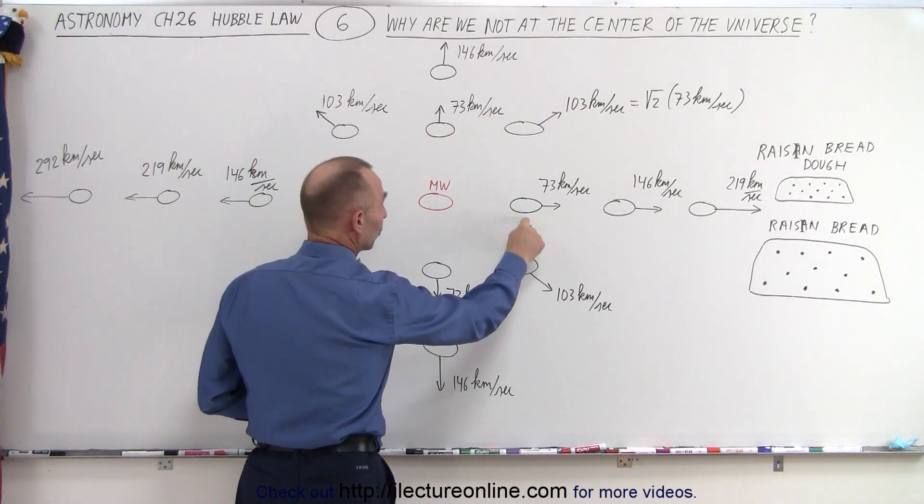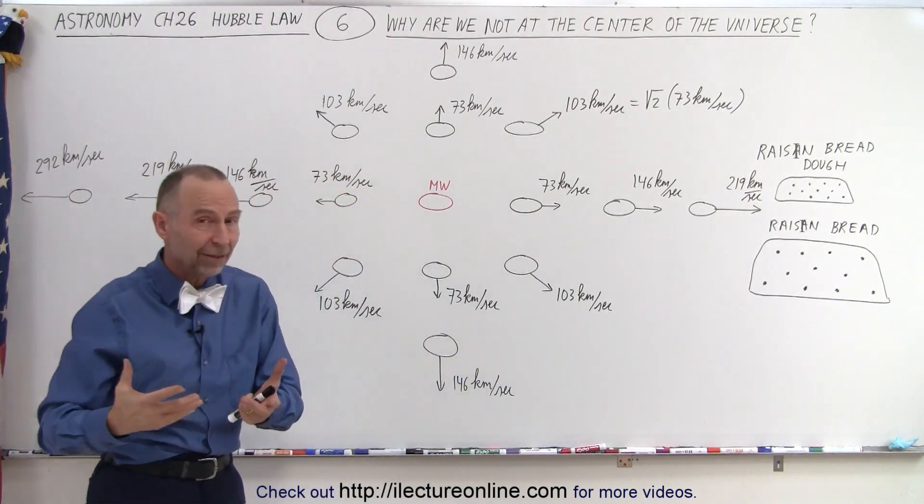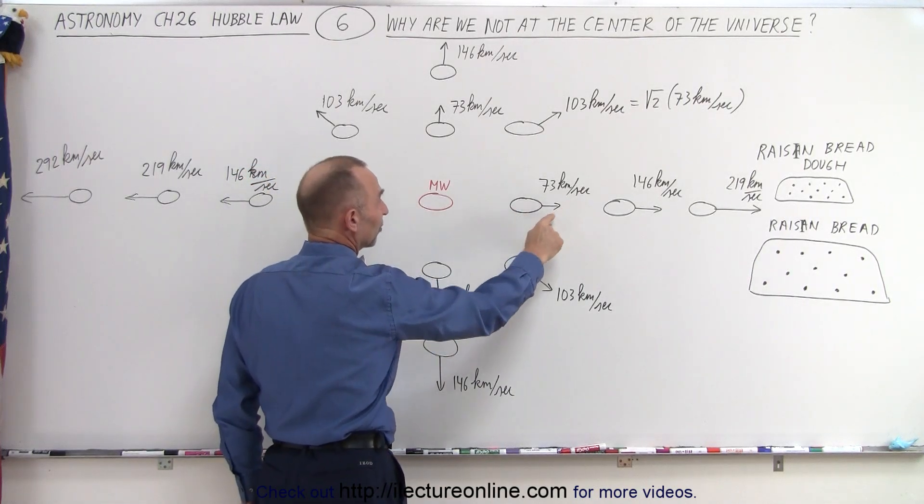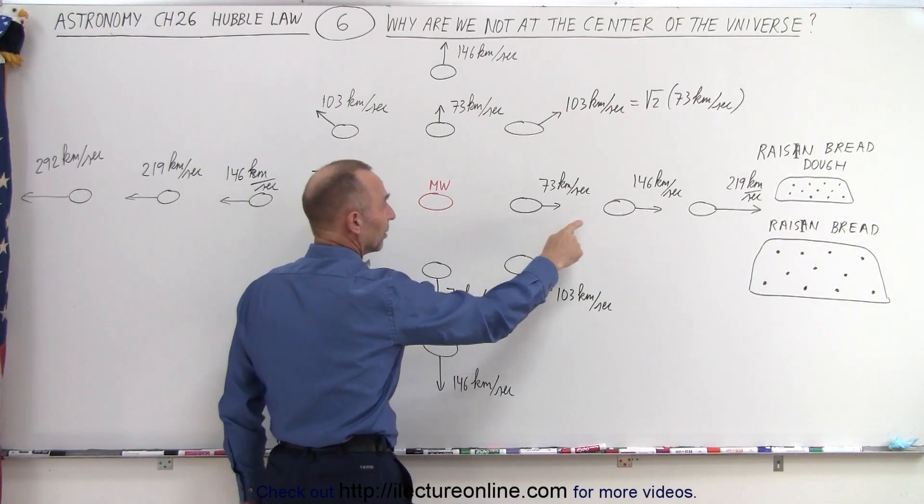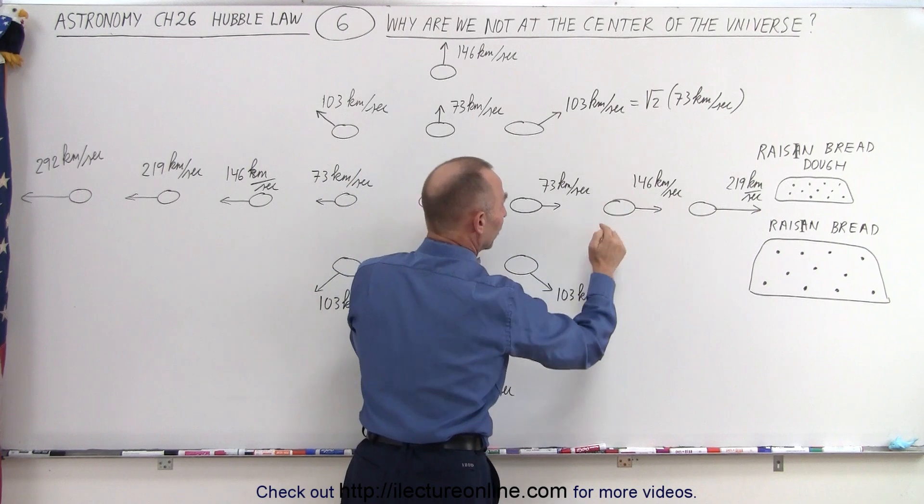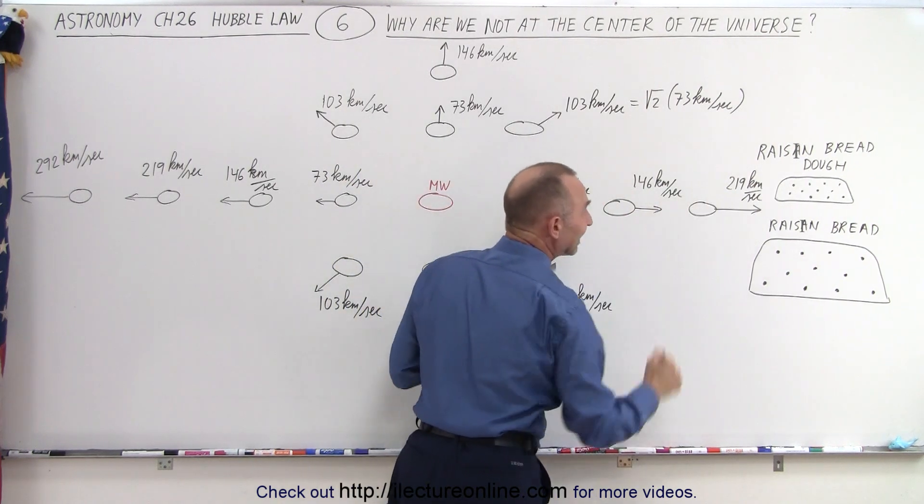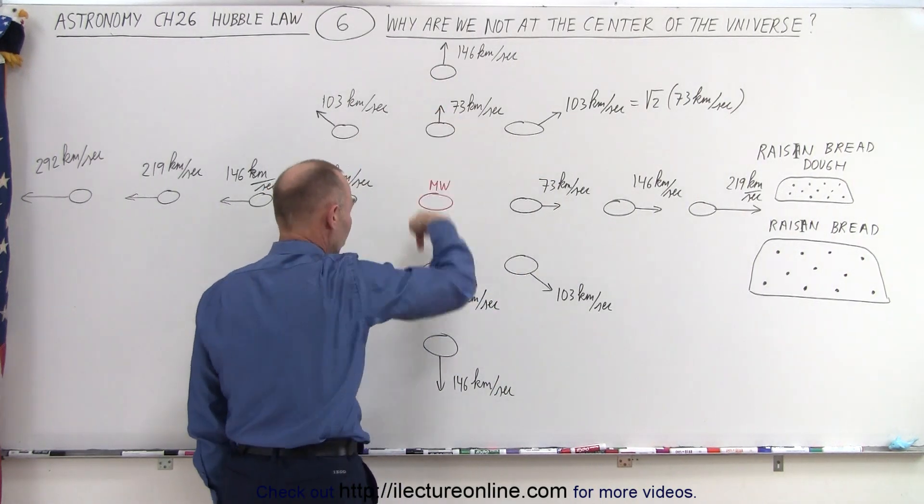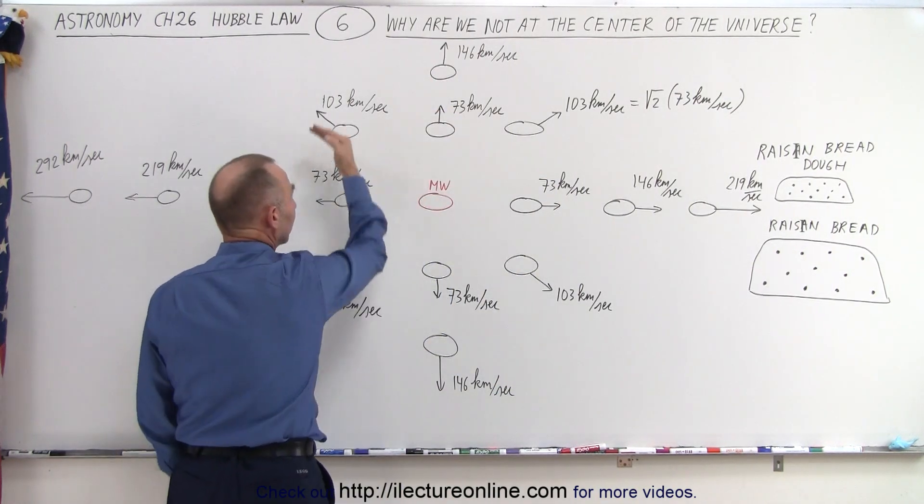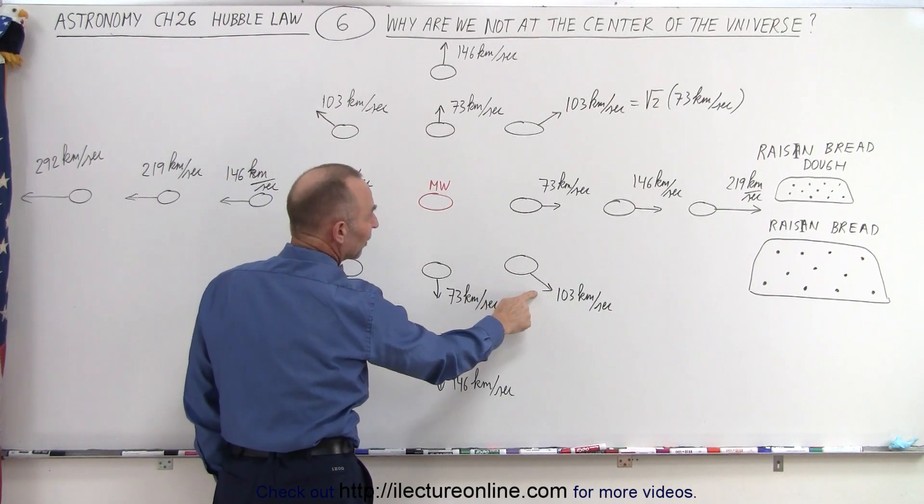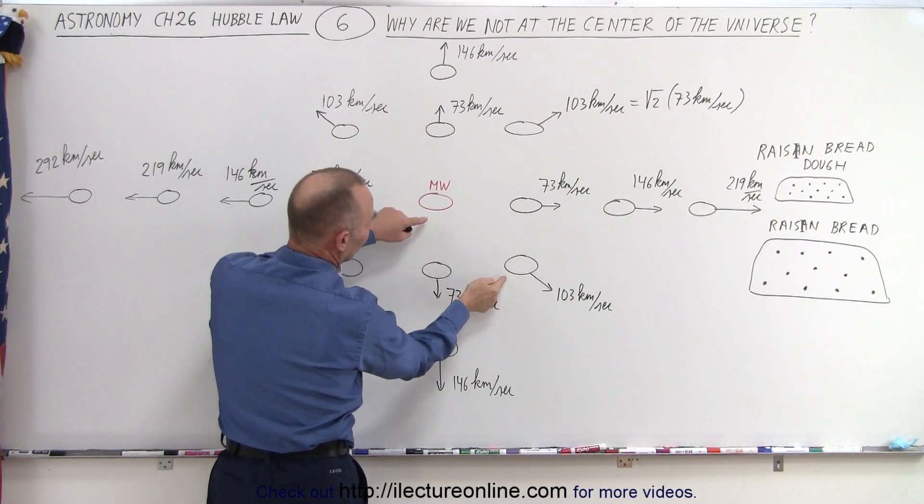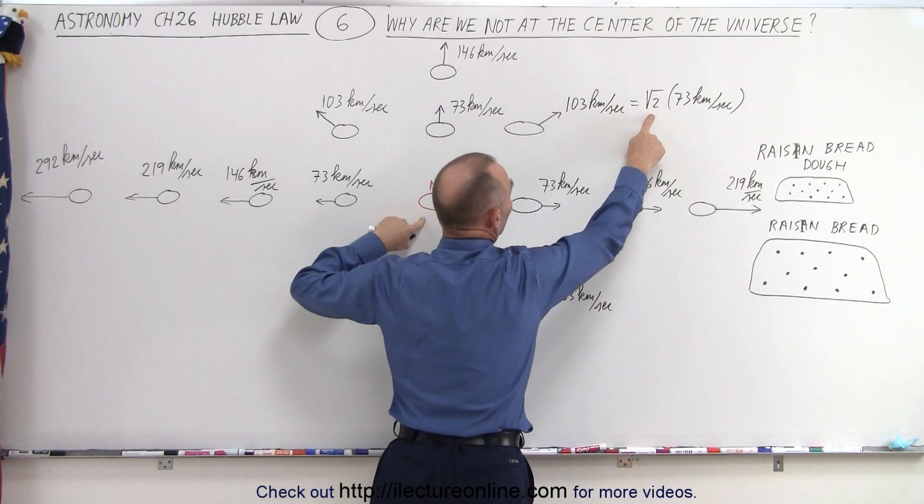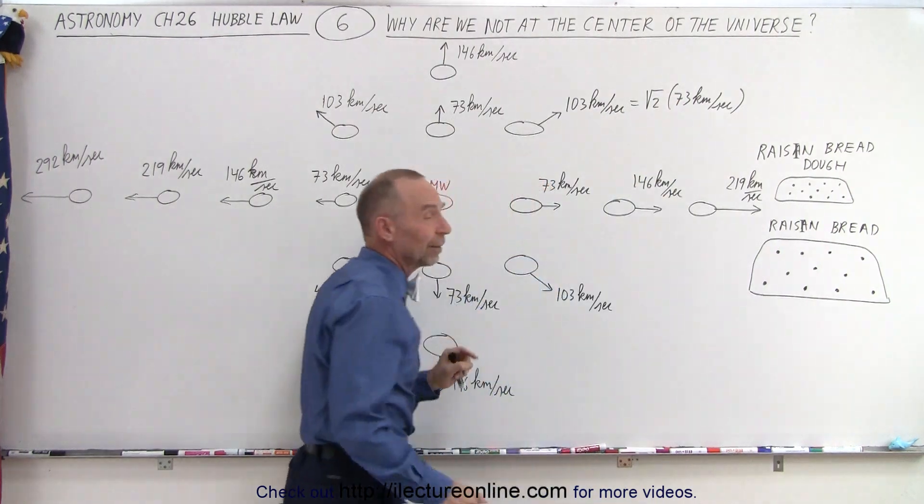So assuming that this is 1 megaparsec and the Hubble constant being about 73 kilometers per second per megaparsec, then this galaxy would be moving away from us at 73 kilometers per second, this one being twice the distance at 146, and this one at three times the distance, 219 kilometers per second. But it doesn't matter if we look in that direction or we look in this direction or this direction or this direction or diagonally. Notice that this one is moving a little bit faster because diagonally this distance is greater than this. And so you can see that 103 kilometers per second is the square root of 2 times 73 kilometers per second.